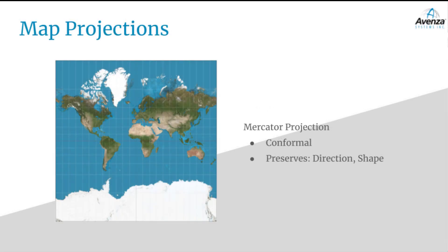One example of a map projection is the commonly used Mercator projection. This is a conformal projection, which preserves the direction of the parallels and meridians and the shape of features, and thus cannot preserve area or distance. As a result, features become more inflated as you move further away from the equator.